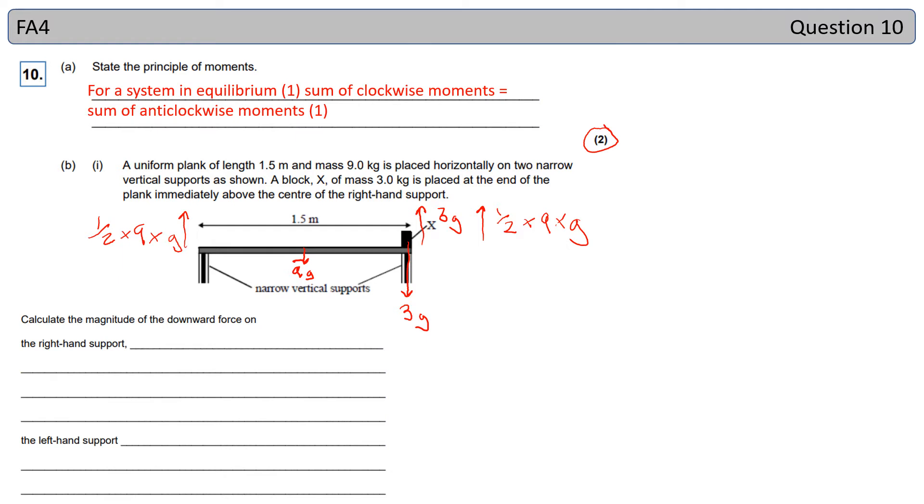So the right hand support is going to be equal to my three times 9.8 plus my half times nine times 9.8. And that gives me a force of 73 newtons.